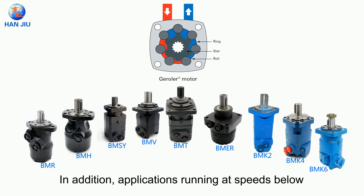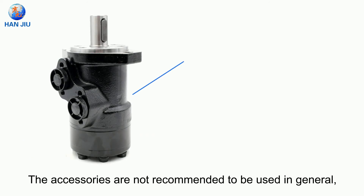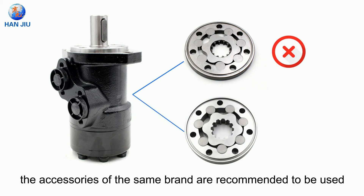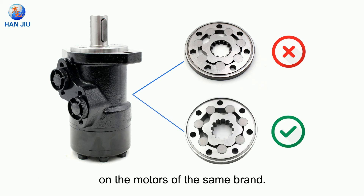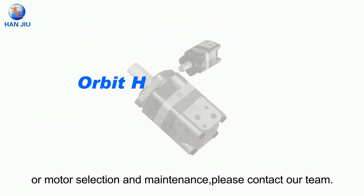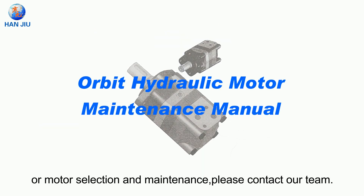In addition, applications running at speeds below 100 RPM should consider using geroller motors. Accessories are not recommended to be mixed across brands; accessories of the same brand are recommended for use on motors of the same brand. If you need help determining motor efficiency, motor selection, or maintenance, please contact our team.